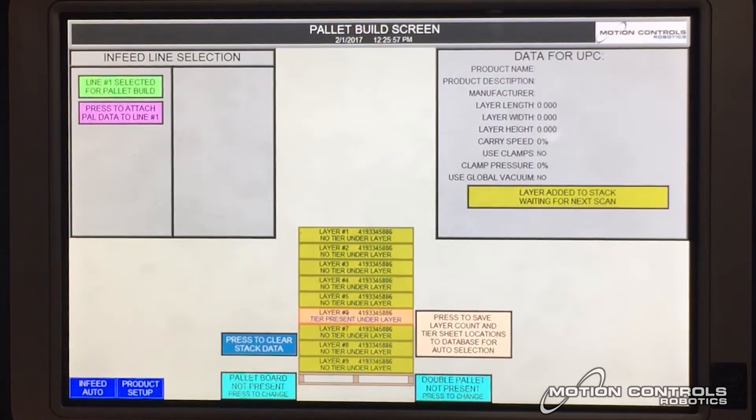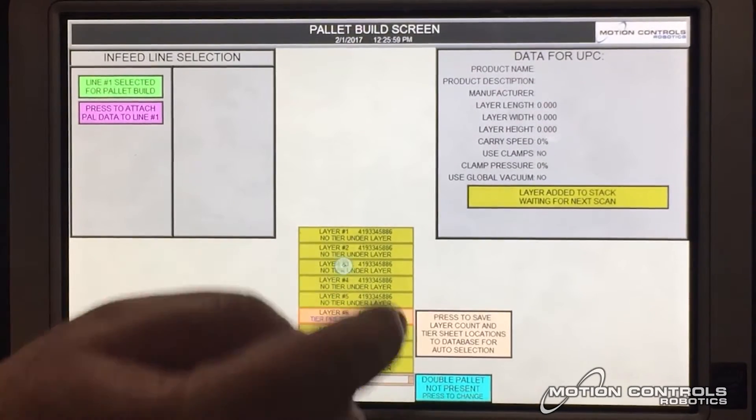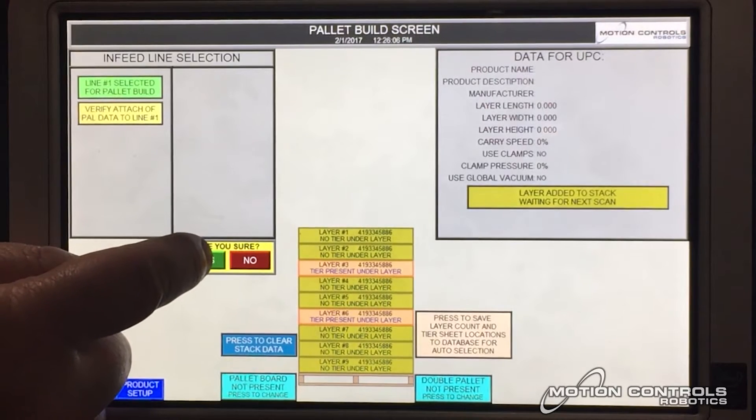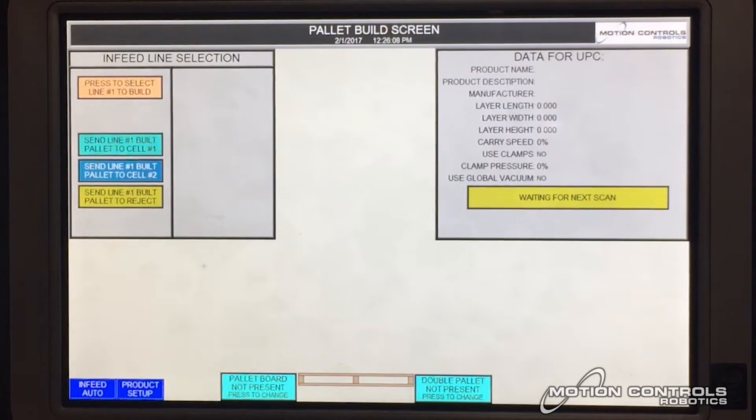Select any layers on the stack that contain a tier sheet. Attach the pallet data to align and specify robot stacking area.